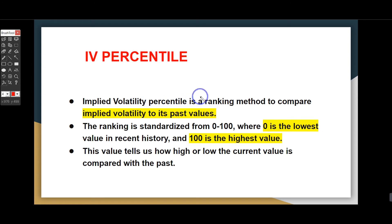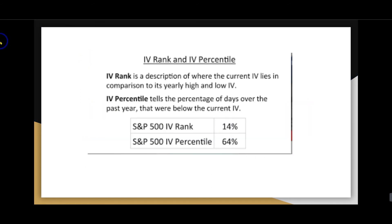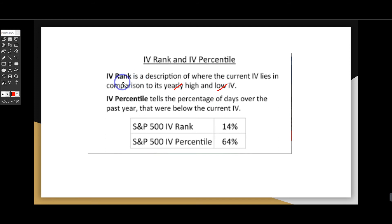The IV percentile is a ranking method to compare the implied volatility to its past values. The ranking is standardized from 0 to 100, where 0 is the lowest and 100 is the highest. The value tells us how high or low the current IV is compared to historical values. The IV percentile tells the percentage of days that were below the current IV level.